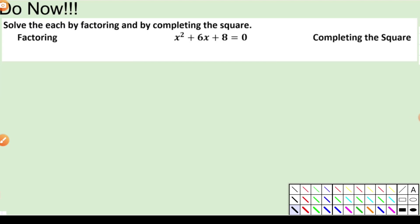Alright, let's go over this do now. Solve each by factoring and completing the square. So you're going to solve this problem by just factoring. We've done that millions of times before. So let's factor this: x squared plus 6x plus 8 equals 0. So factoring, we should be naturals at this by now.